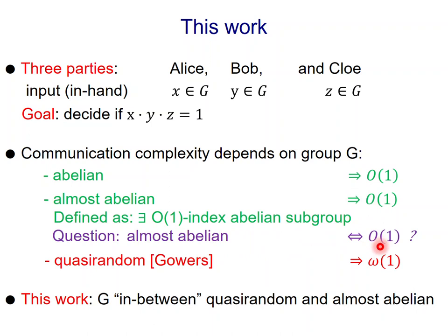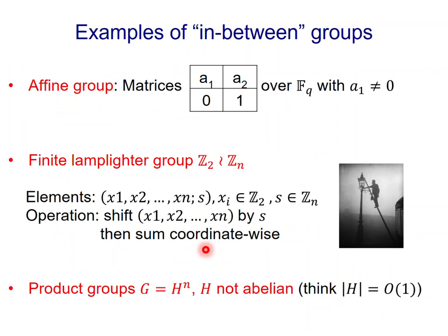Moving forward, there is another class of groups which is known as quasi-random, introduced by Gowers. For these groups, the communication is large. How large depends on how quasi-random the group is, but you can think of it as being a growing function. So, in this work, we're going to consider groups which are in-between, quasi-random and almost abelian. Let me give you some examples of such in-between groups.